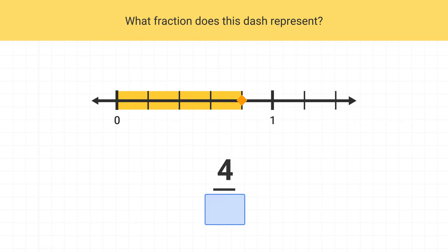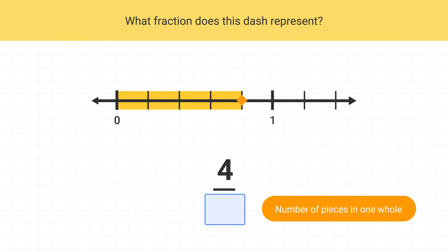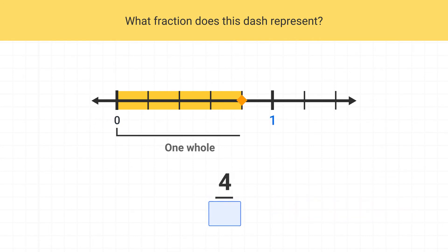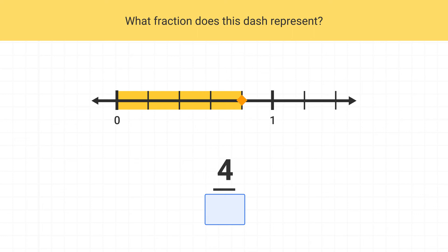Next, we find the denominator. Remember, the denominator is the total number of pieces in one whole. This is one whole on our number line. How many parts are in this one whole? We can see this whole is split into one, two, three, four, five parts. So five is our denominator. This dash represents the fraction four-fifths.